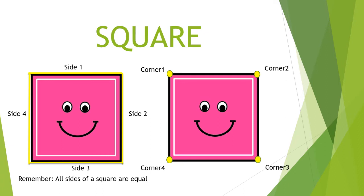Now we will count the number of sides of a square. Side 1, side 2, side 3, and side 4. A square has four sides. Here I want to tell you that all sides of a square are equal. Now let's count the corners of a square: corner 1, corner 2, corner 3, and corner 4. A square has four corners. So in a square there are four sides and four corners.